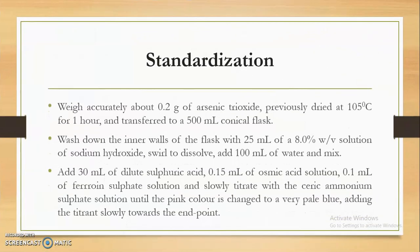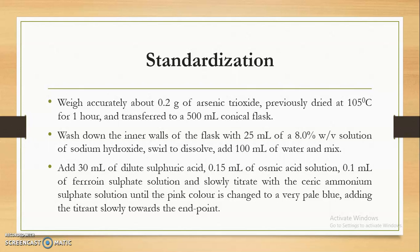For standardization: accurately weigh about 0.2 gram of arsenic trioxide (primary standard, previously dried at 105°C for one hour) and transfer to a 500 ml conical flask. Wash the inner walls with 25 ml of 8% w/v sodium hydroxide solution, swirl to dissolve, and add 100 ml of water. Add 30 ml of dilute sulphuric acid, then 0.15 ml of osmic acid solution and 0.1 ml of ferroin sulphate solution as an indicator. Slowly titrate with ceric ammonium sulphate until the pink color changes to a very pale blue color.